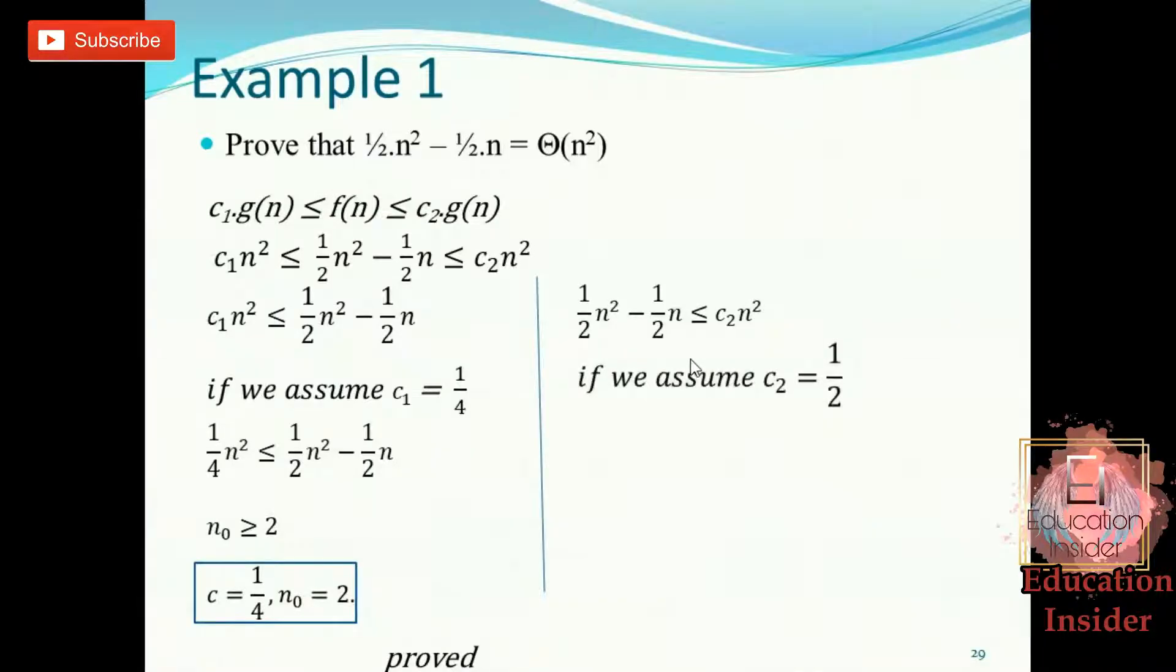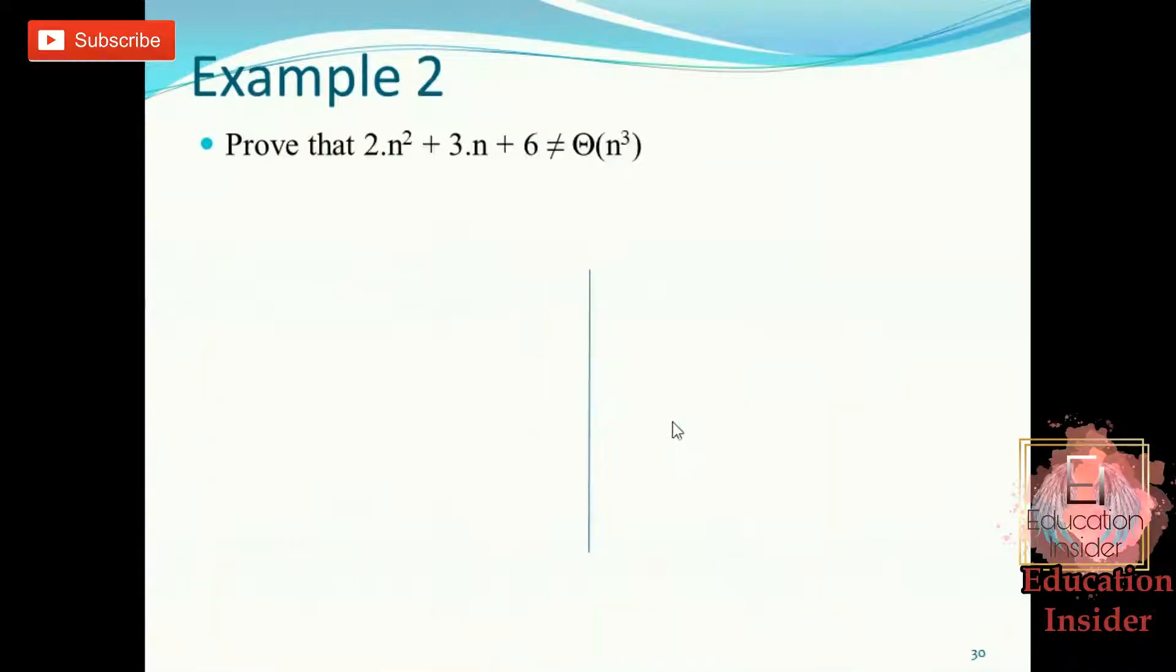If we assume c₂ value as ½, then this inequality will hold. So now if we populate c₂ value into this equation, doing some algebra we will be getting n₀ value as 1. So yes, we have proved the upper bound and the lower bound of this function f(n).